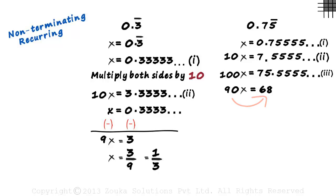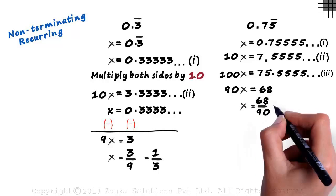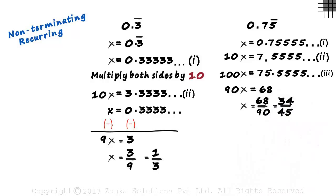Transposing 90 to the other side, x would equal 68 by 90, which can be reduced to 34 by 45. So that's how we converted a mixed recurring decimal to the form P by Q. It's simple. Just aim to get the recurring part after the decimal and you're done.